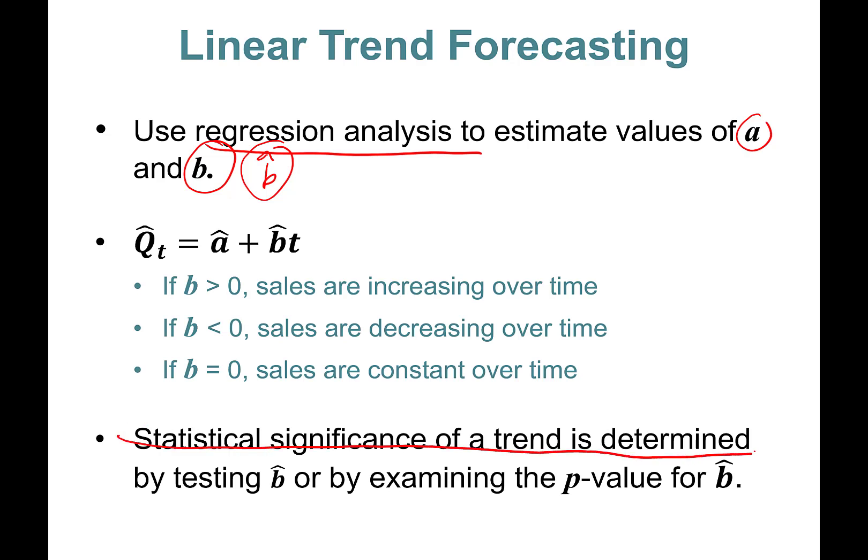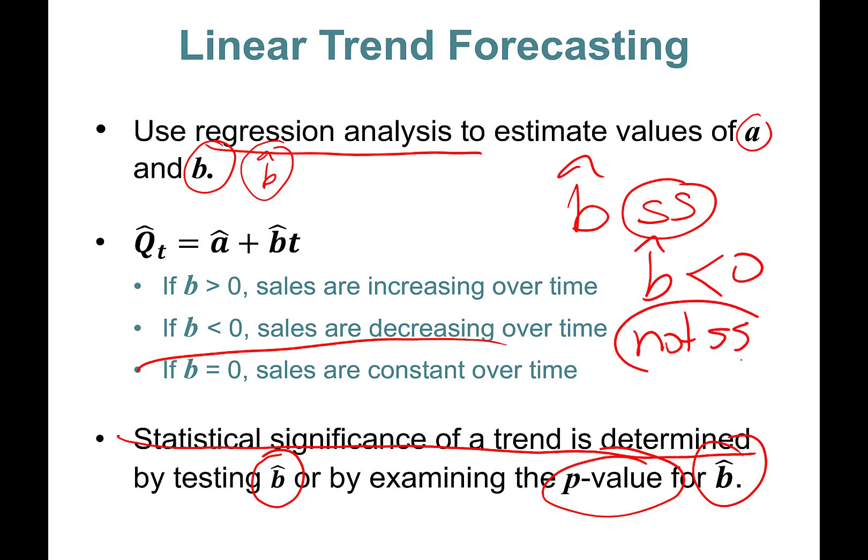Statistical significance of a trend is determined by testing beta hat or by examining the p-value of beta hat. You want beta hat to be statistically significant. If it's not statistically significant, even if it's a positive value, that is still equal to zero.